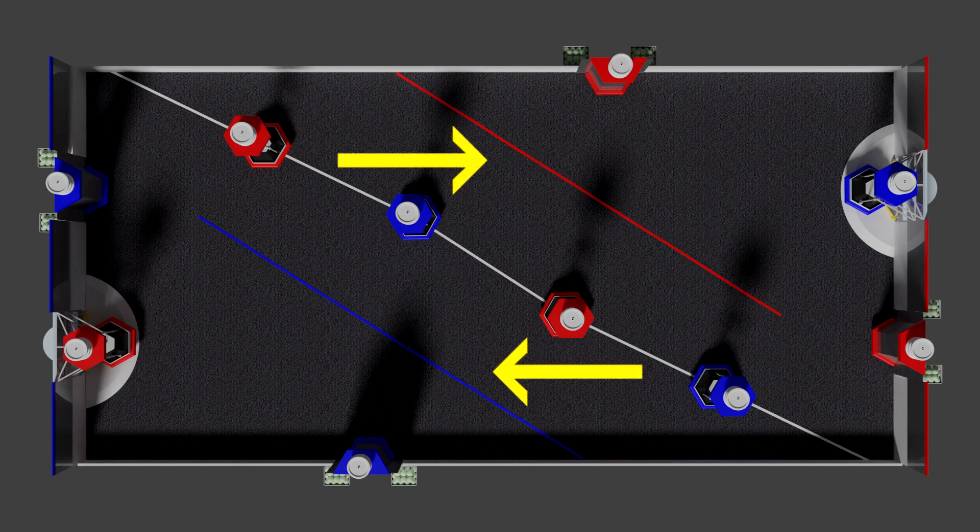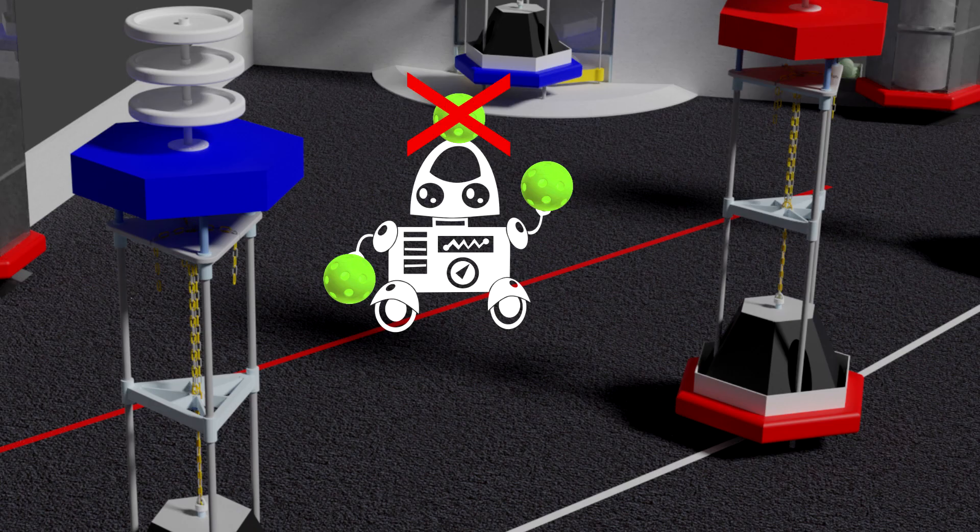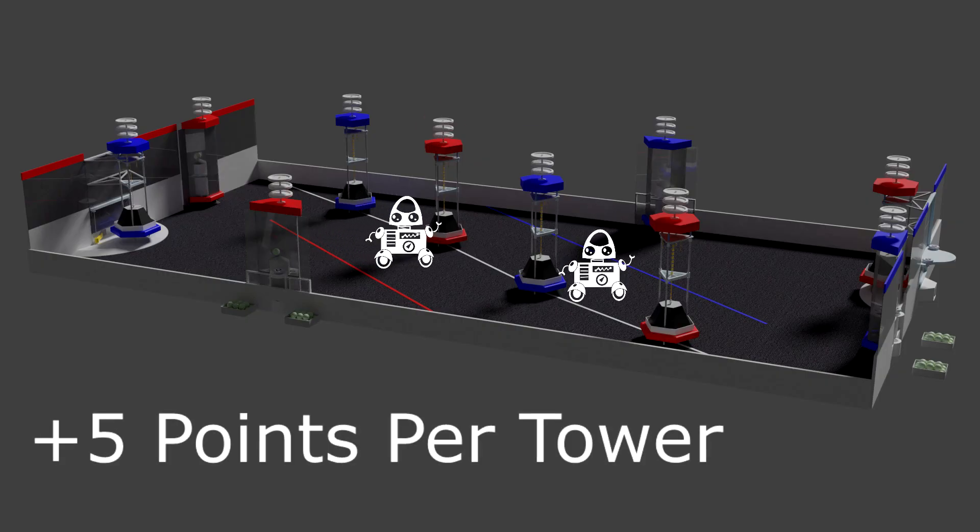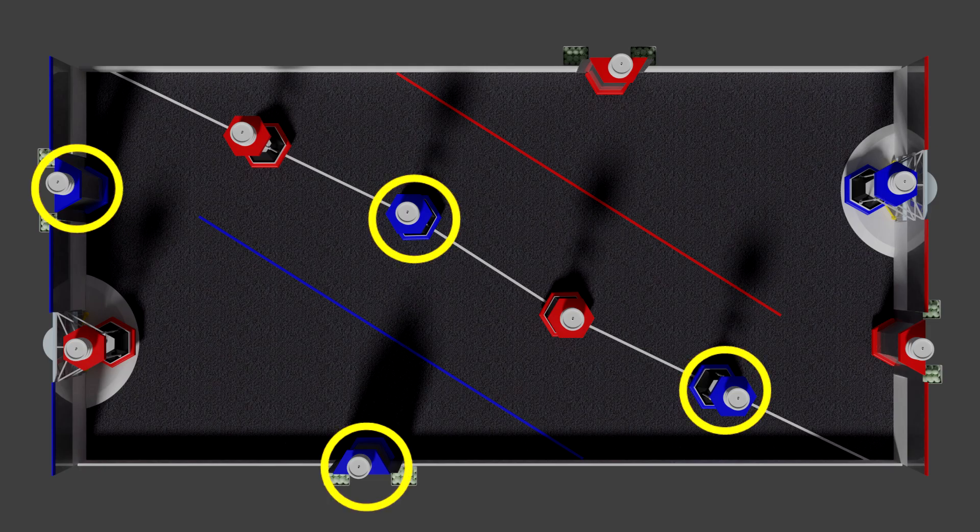Robots start the match on their initiation line and may start with two pinballs. They can only carry up to two at a time throughout the match. In the first 15 seconds of a match, robots autonomously move to activate towers. Robots must stay on their side of the field. An extra five points is awarded to any alliance that activates all four towers.